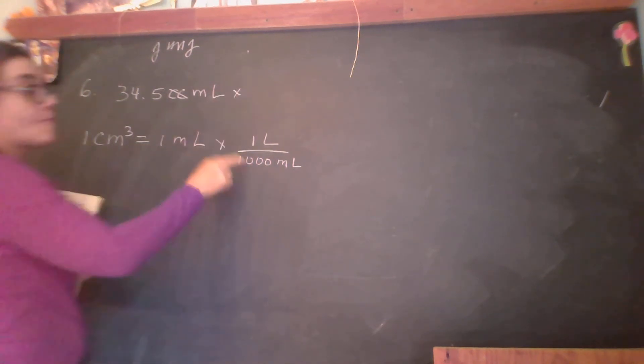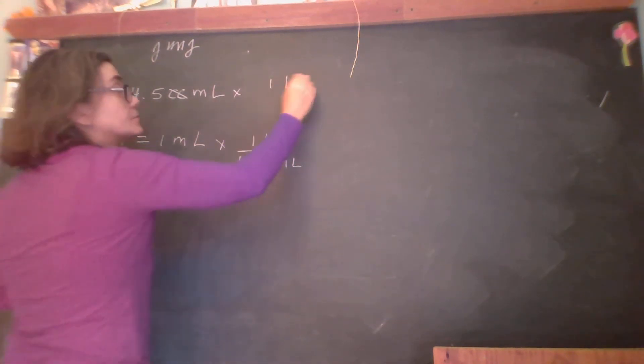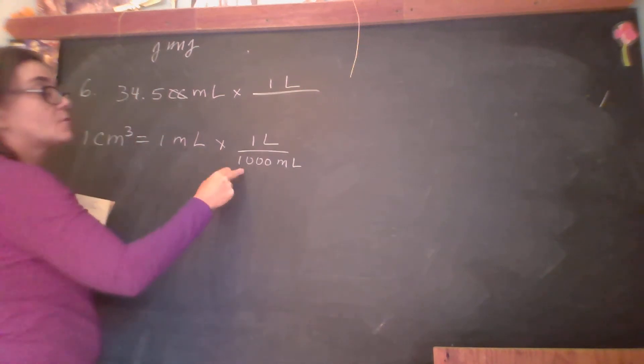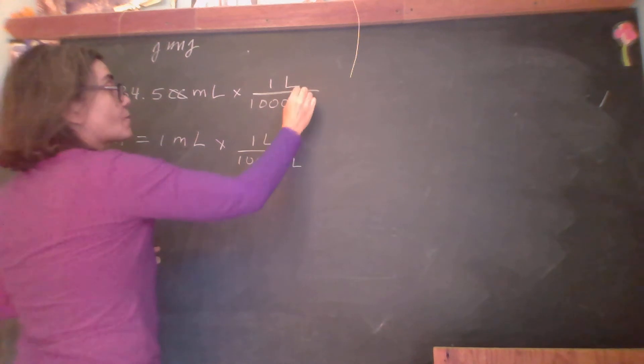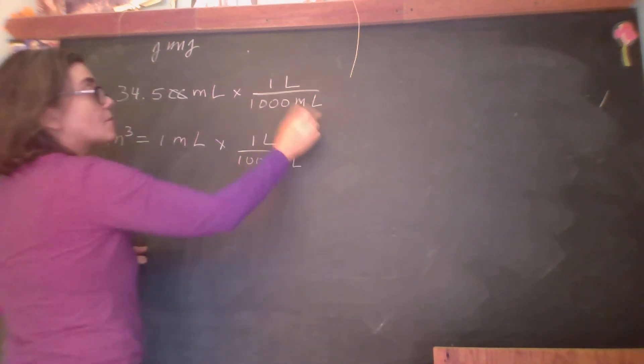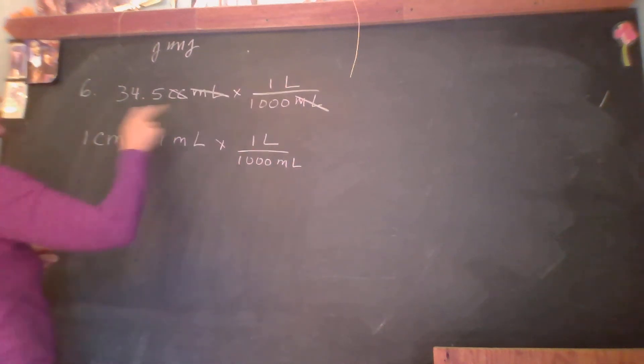And then we multiply it by one liter over one thousand milliliters. And then we cancel out and end up with liters. So what are we going to do? We're going to divide this by a thousand.